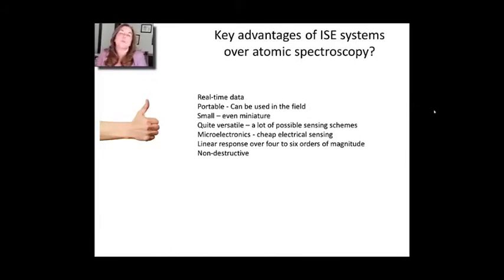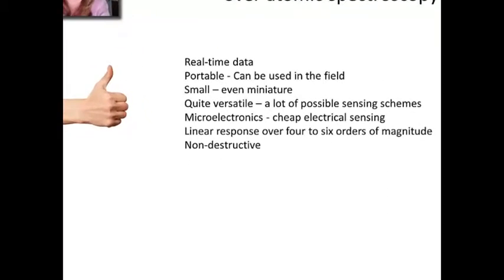So let's summarize what are the key advantages of using an ion-selective electrode over atomic spectroscopy. Now I'm going to tell you while you read this list, I left something out. Real-time data - that's really important. It's not something you can easily get from atomic spectroscopy. It's portable. You can use it in the field. It's small. It's versatile. Because of microelectronics, you can make it really cheaply. It has a linear response over four to six orders of magnitude. And it's non-destructive. One of the other advantages is that you actually don't need a lot of volume of material. You just need enough to cover the surface of the electrode and get all the pieces in that you need. And if it's a miniaturized sensor, that could be a relatively small volume.